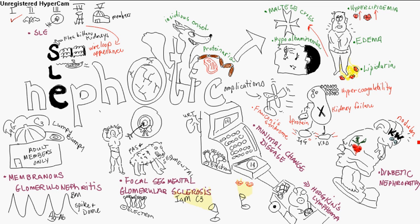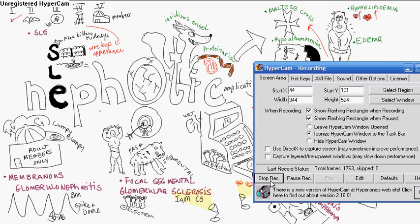Under electron microscopy, you see an increase in glomerular basement membrane thickening. Microalbuminuria is the early sign, and proteinuria is the late sign. Strict glycemic control and treatment of hypertension can slow the progression to progressive end-stage renal disease and dialysis.